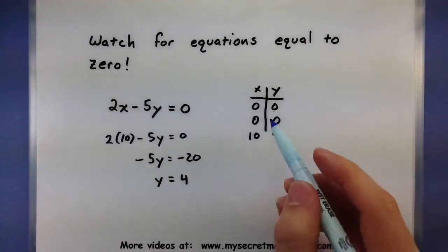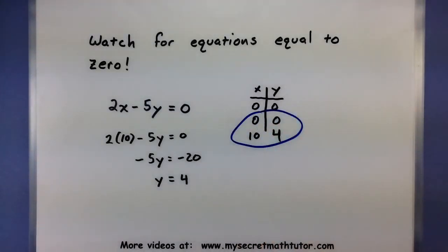And now I'd end up using these two points right here to go ahead and graph that line. Remember, you need at least two points to graph the line, and as soon as you got them, you're good to go. Well, that's all I have for now. Thanks for watching. Bye-bye.